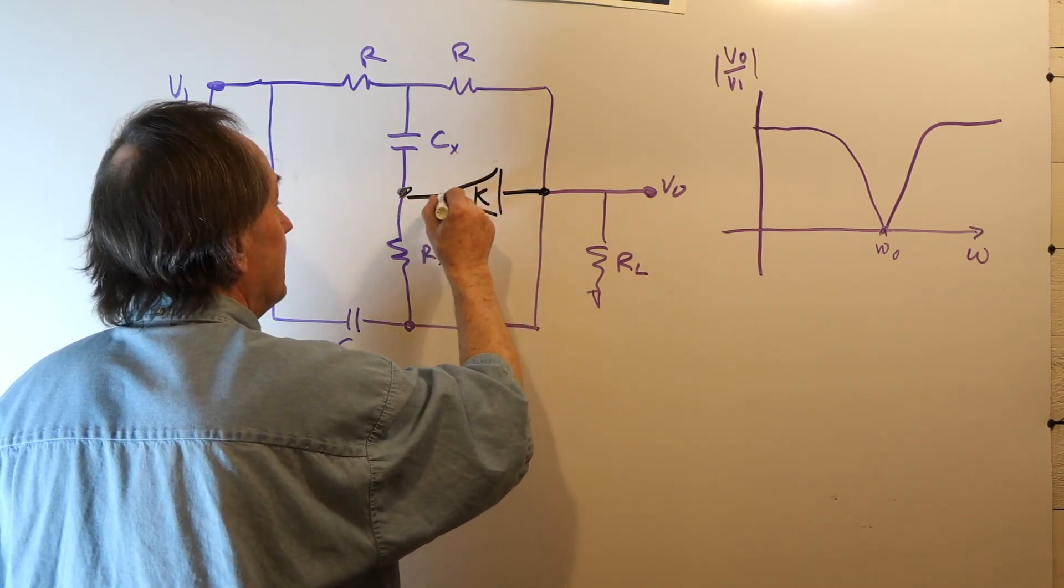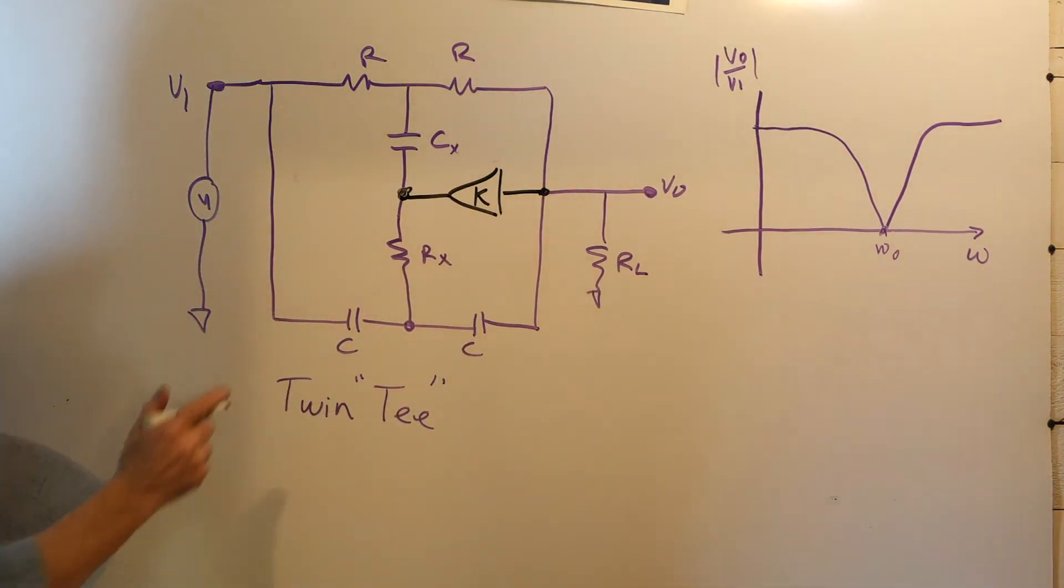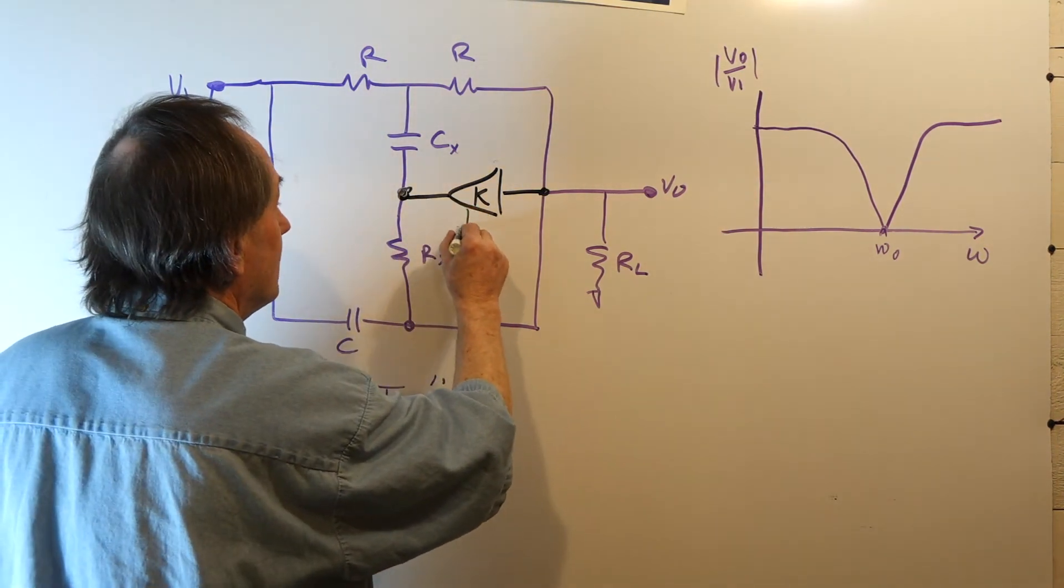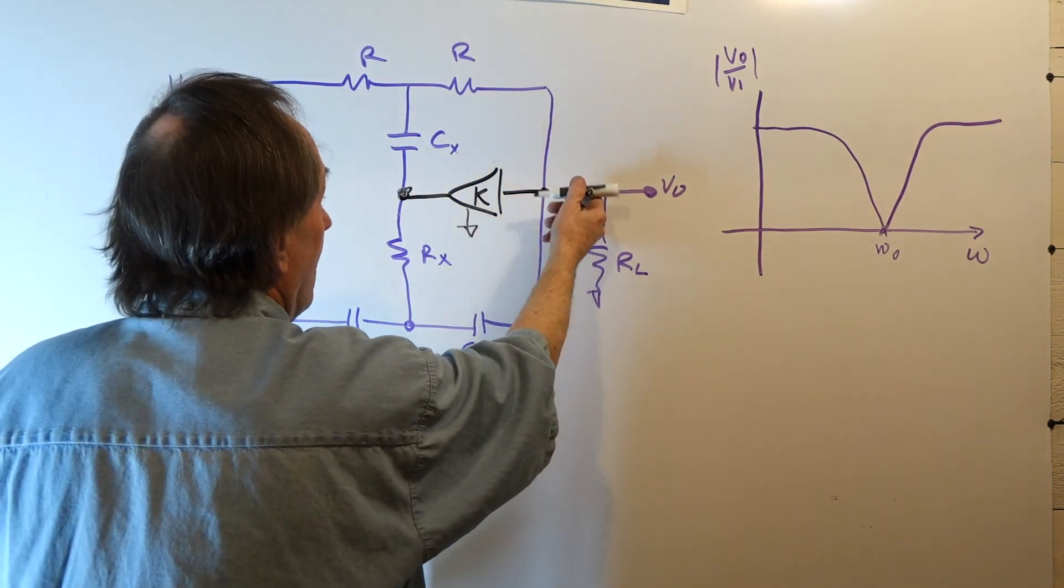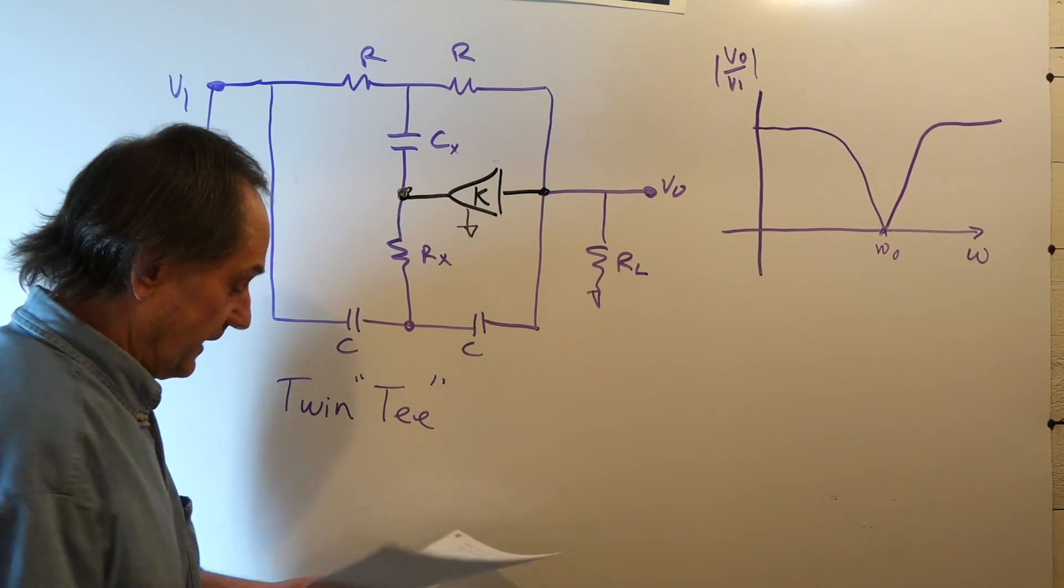I'm going to connect the output through an amplifier with gain K, positive gain K, to that node and bootstrap it up from the output. I'm taking some output and feeding it back into the network.